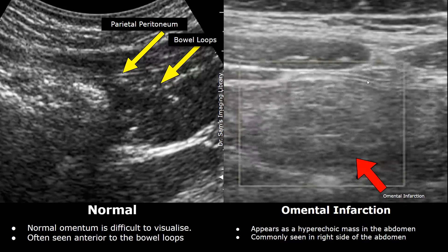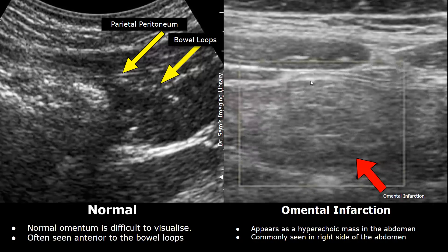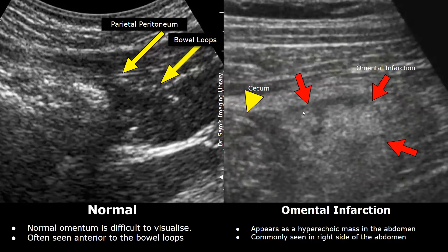Here is another case of omental infarction. A hyperechoic mass is seen in the abdomen. It will not show any internal flow on color Doppler. This image shows an omental infarction in the right lower quadrant — a hyperechoic non-compressible structure is present. After a CT scan, it was diagnosed as omental infarction. Normally, we will not see such types of masses in the abdomen.